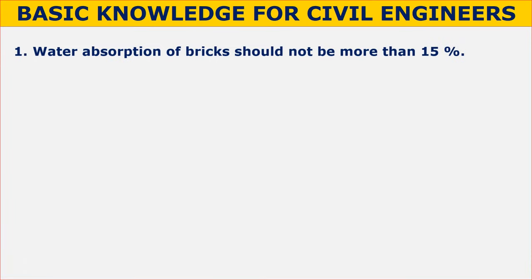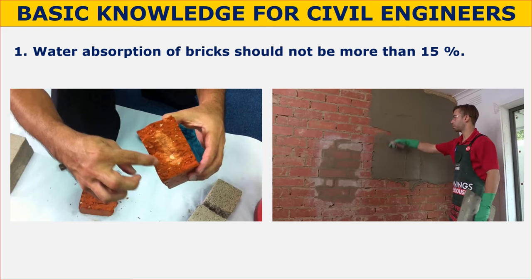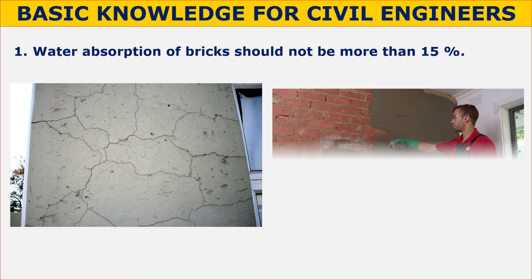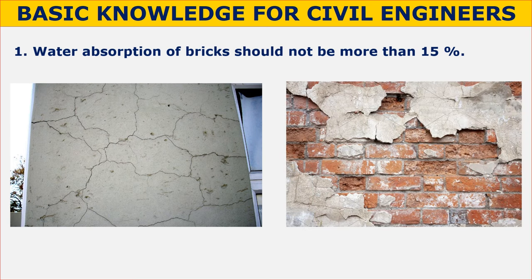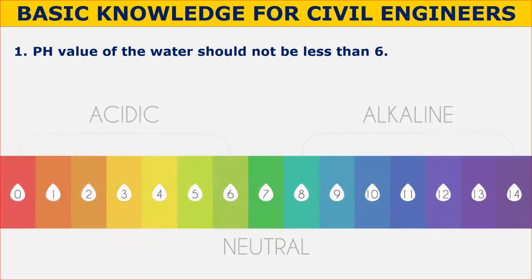Water absorption of a brick should not be more than 15 percent. Bricks often absorb water from fresh mortar when laid dry. If the rate of water absorption is high, it may affect the hydration of the mortar, resulting in poor bonding between bricks and mortar. The suction exerted by the units is an important factor affecting fresh mortar and the properties of the mortar joint. This can lead to cracking and removal of plaster as the binding strength is lost.